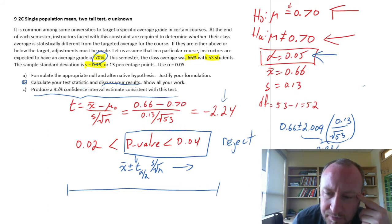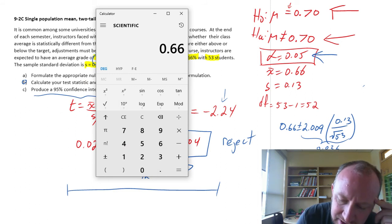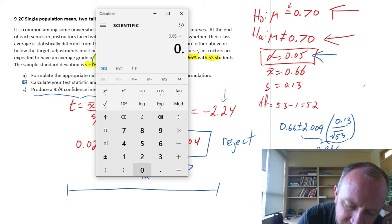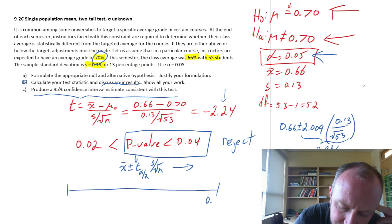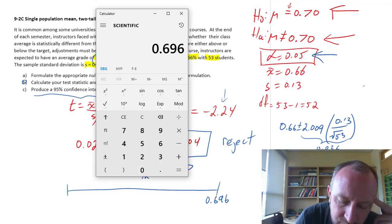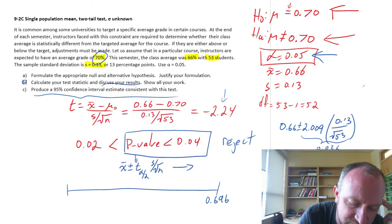So now our limits. So 0.66, that point estimate, plus our margin of error, 0.036. So 0.696. And our lower limit is our point estimate minus 0.036, 0.624. And that point estimate is in the middle. And this was all done at the 1 minus alpha or 95% level of confidence. So this is a 95% confidence interval for the unknown population mean.